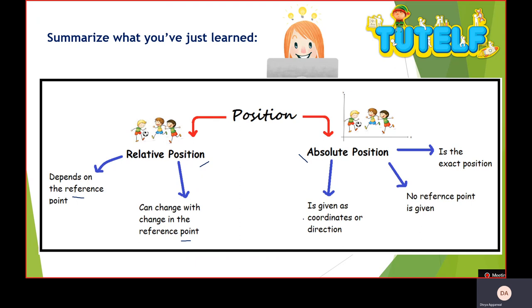In absolute position, we give coordinates or fixed directions, like 2 meters north-west. So in that case, that is also your absolute position. It is the exact position. You will know exactly where it is. If you put on Google Maps, you will see 23 degrees north, 30 degrees west, 40 degrees south and 60 degrees east. You will get an exact location. We don't give reference point in this. The reference point is fixed. That is O.